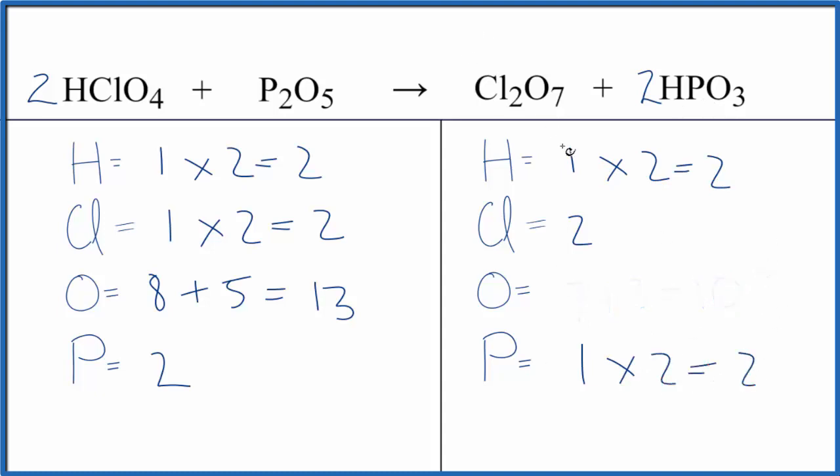Let's update the oxygens. We have seven here plus two times three is six. That equals thirteen. And this equation is actually balanced.